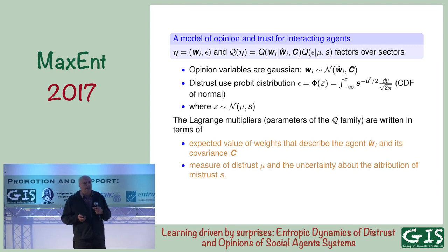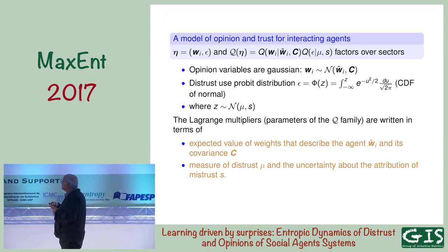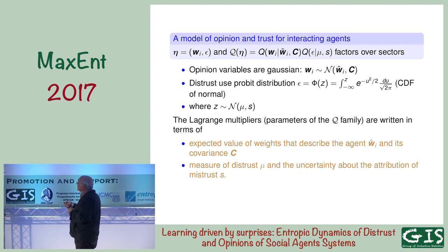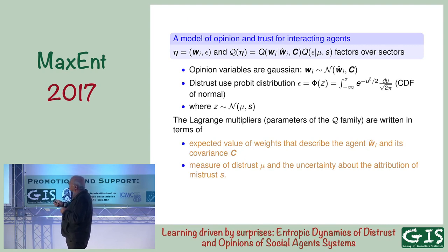I have to choose the family of distributions. I choose Q to be a Gaussian family on the weights, so the variables I'm interested in are the covariance and the mean values. For the distrust sector, I'm going to use a distribution — this is a value from zero to one — so I'm going to choose the CDF of a normal distribution. Z here is some normal with mean mu and variance s-squared. If mu is negative, the expected value of epsilon is below one-half, so the agents are in a trusting or courteous relation. If mu is larger than zero, the expected value of epsilon is larger than one-half, and they are in a distrusting or discourteous relation.